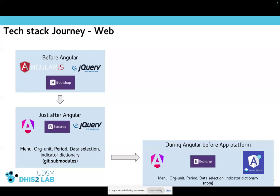When the DHIS2 application platform introduced core DHIS2 UI libraries, app adapters, and app runtimes to quickly start React applications based on DHIS2, it was challenging for us. We had many Angular applications and it was quite challenging to migrate everything to React. This is what we thought we could try out — ensuring we use the best practices brought by the core libraries while managing our existing Angular codebase.